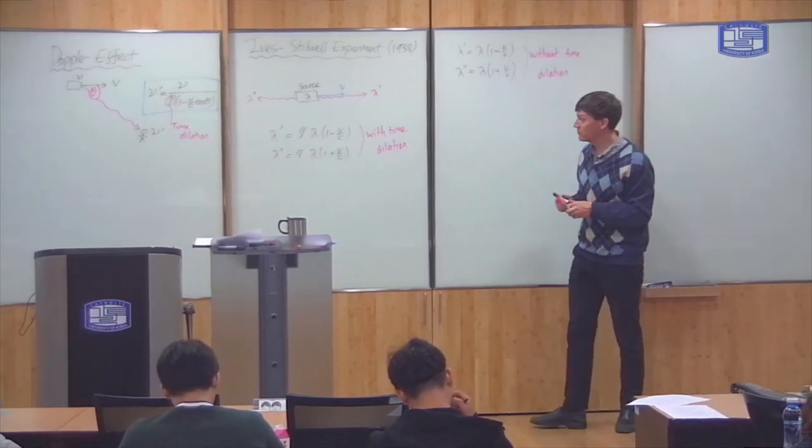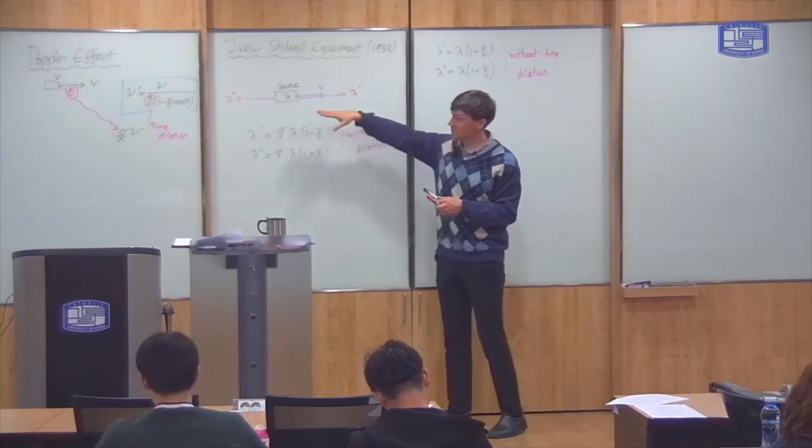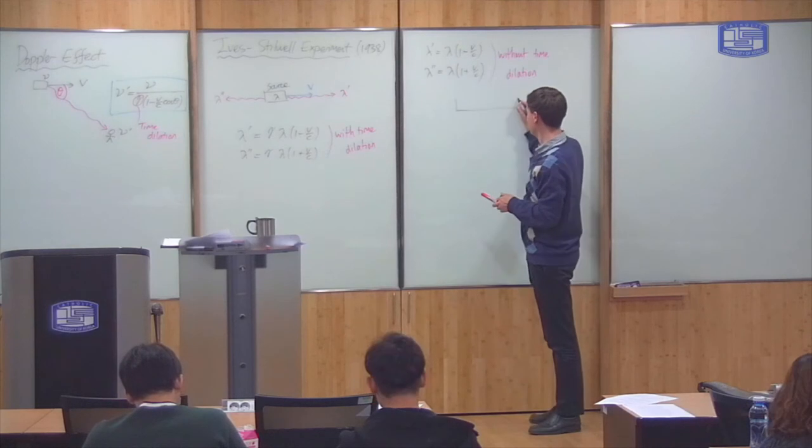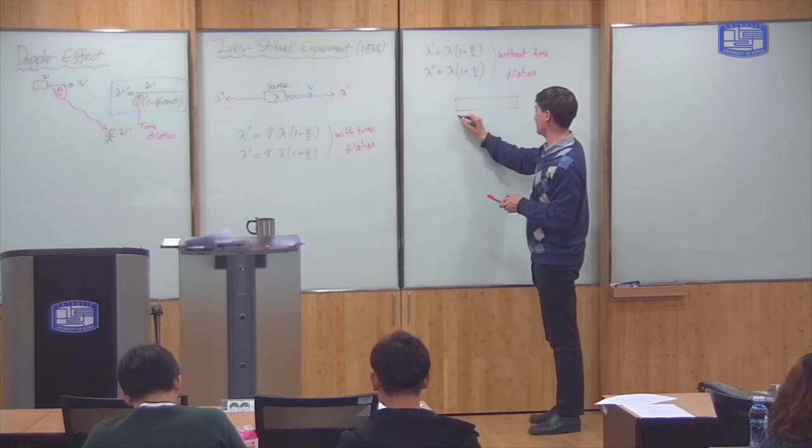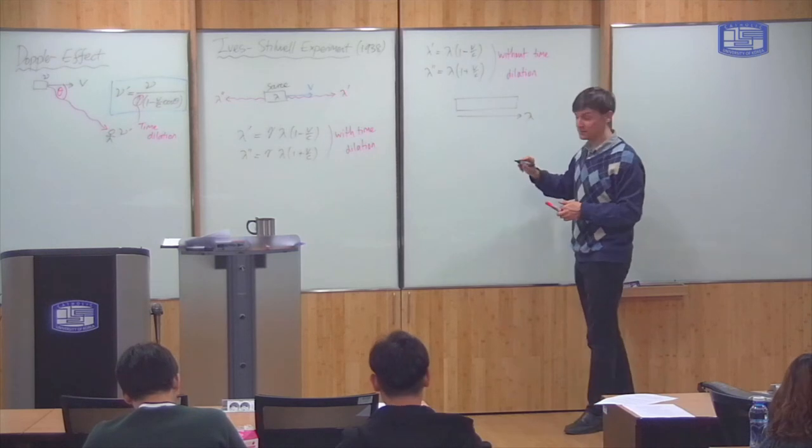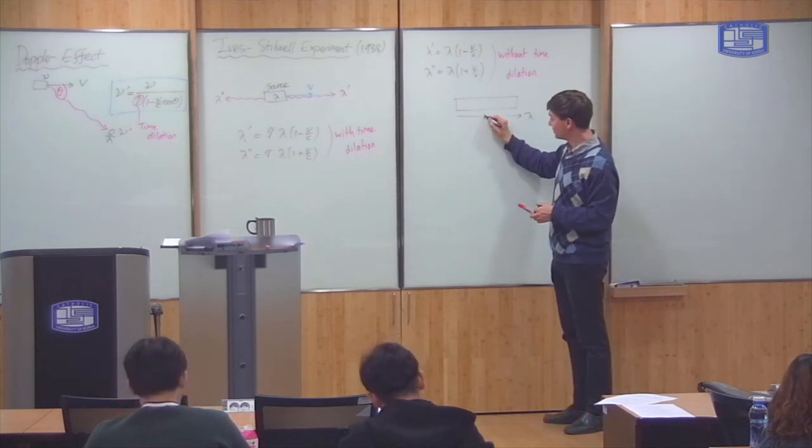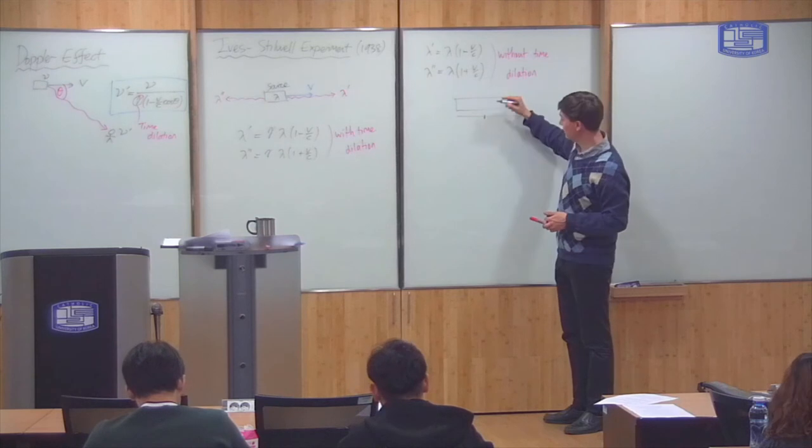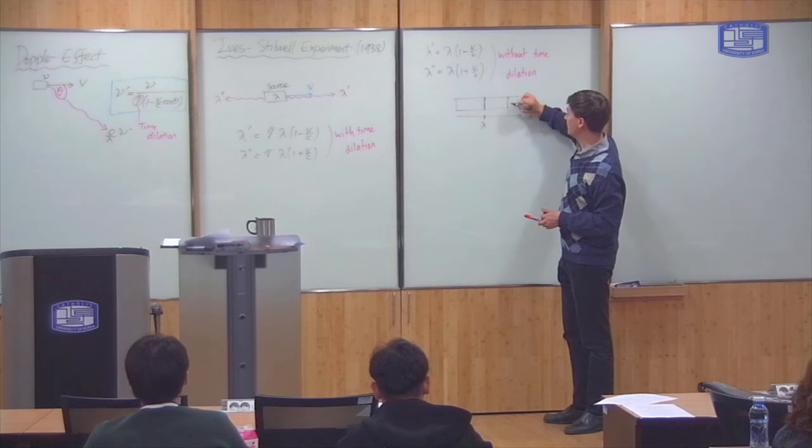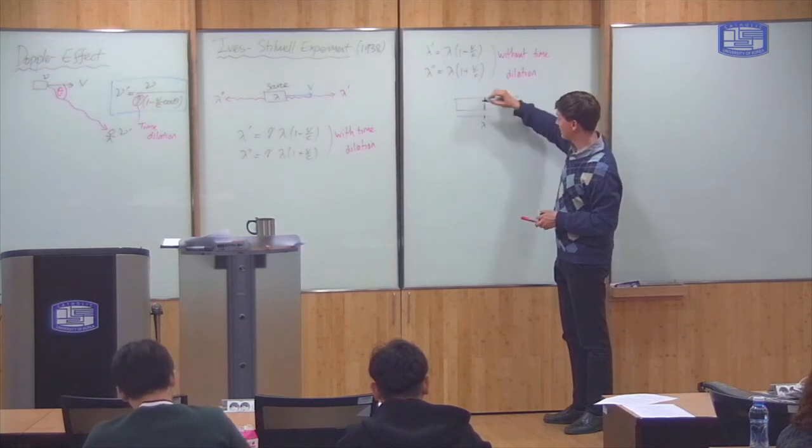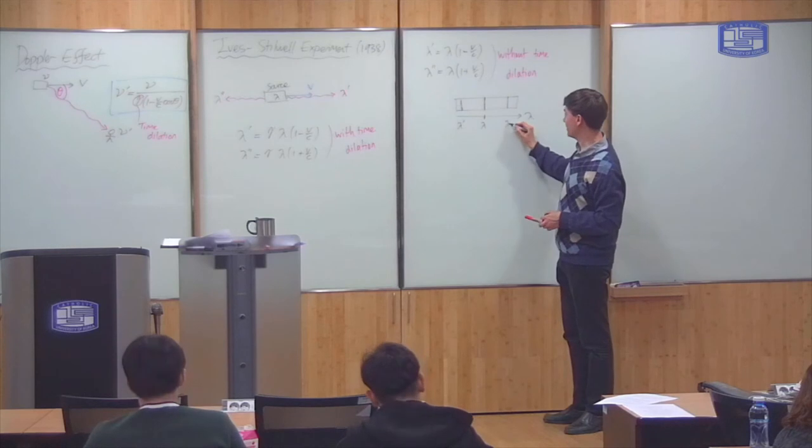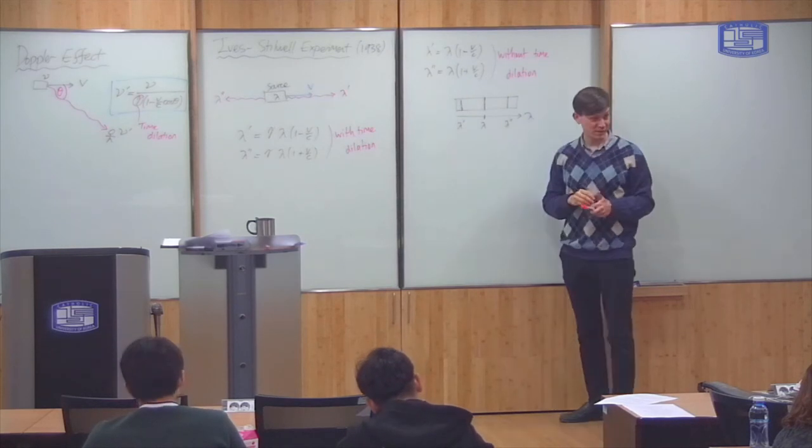So what you do is you plot, you measure the wavelengths of light that you get. You plot them here. So this is a graph of the wavelength of light you observe, which is lambda here. Without time dilation first, if this is the original wavelength lambda, then lambda prime is less, so it's down here. Lambda double prime is more, so it's over here.